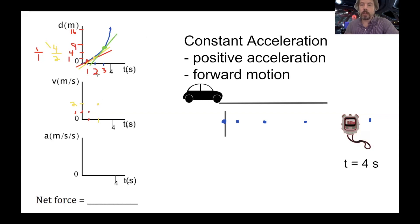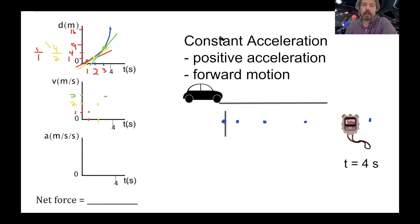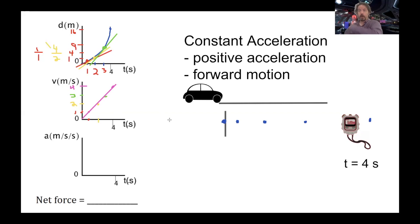The slope is getting steeper and steeper. At t=3, it's nine divided by three, which is three. And the last one — I hope you've noticed the pattern — it will be four, because sixteen divided by four is four. If we graph those points properly with correct scale, what we get is a straight line. So a curved distance line turns into a straight velocity line.